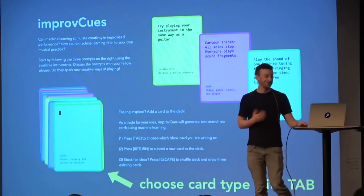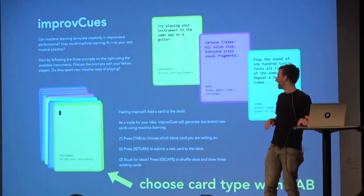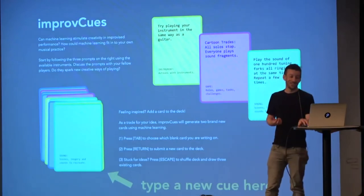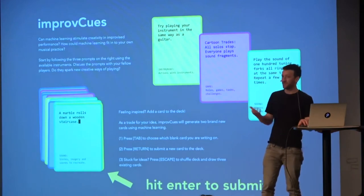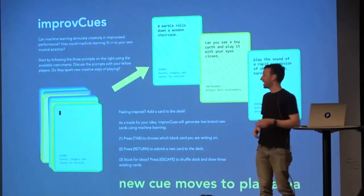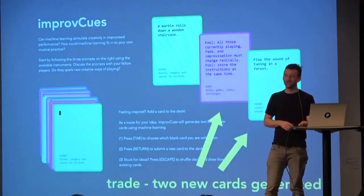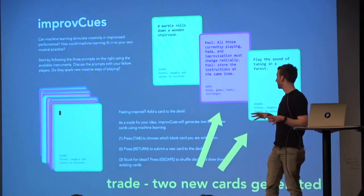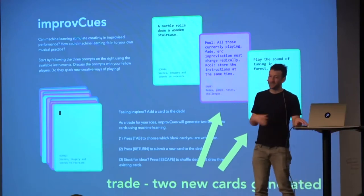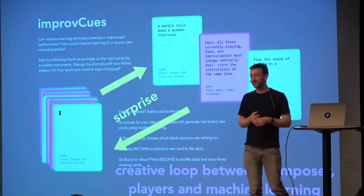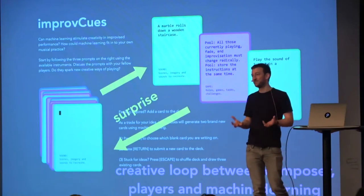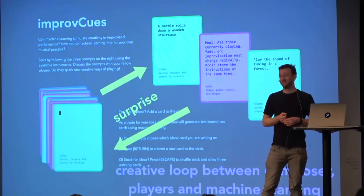You could also add a new card. You choose a type of card — one of the four types — using the tab key. The conductor standing there with the keyboard can do this. You can go through different types of cards and maybe choose to add a new sound, writing in something like 'a marble rolls down a wooden staircase' to evoke a particular image. When you hit enter, it pops up to be played by the performers. This is where it gets fun: two new cards are made by machine learning — just Markov chain generation, very simple stuff — which gives you two new cues to perform with that weren't in the deck before. These get generated and put in the deck, so your deck gets bigger. The idea is to create a surprising interaction between generating cards, suggesting stuff, interpreting through performance, and creating an interesting machine-mediated feedback loop.